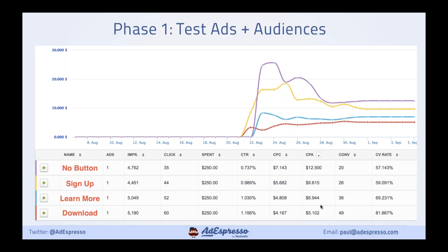Another test we did — very simple: we tested different call-to-action buttons for a lead generation campaign. We tested 'Download' versus 'Learn More' versus 'Sign Up' versus no button. The cost per lead went from $5 up to $12. So testing can literally halve your cost. I always say if you test, you can make a thousand dollars go as far as two or three thousand dollars — it makes a big difference to your bottom line.